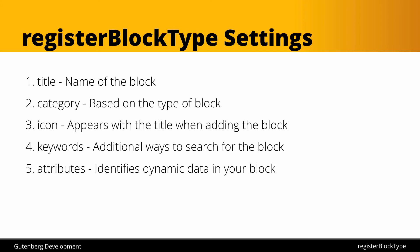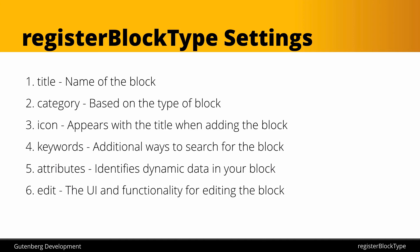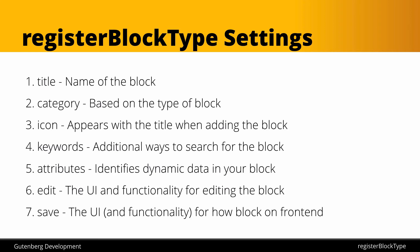Then we get into 'attributes,' which we'll explore last, though in code order they appear next. These identify all of the dynamic data in your block — for example, an editable part of the block needs to be identified here. Attributes are actually one of the more clever pieces of engineering under the hood. Then we have the 'edit' setting, where we pass in all of the UI and functionality for editing the block, built with JavaScript — most commonly using JSX. This will define the markup inside the block, plus all the functionality for when something is changed or edited, and will likely be the largest portion of your block code.